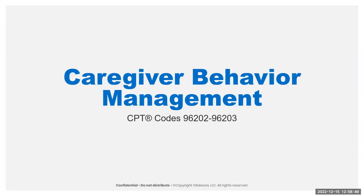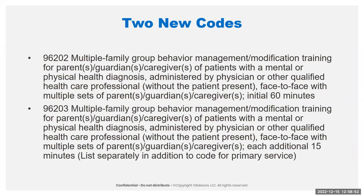There are changes to behavior management for multiple family group behavior management modification training. This is not the 994 codes for modification — this is multiple families where the parent, guardian, or caregiver can receive help in learning how to deal with a patient having behavioral issues. For example, children with ADHD and also oppositional defiant behavior — this would help the parent, guardian, or caregiver have coping mechanisms and teach them positive reinforcement strategies.